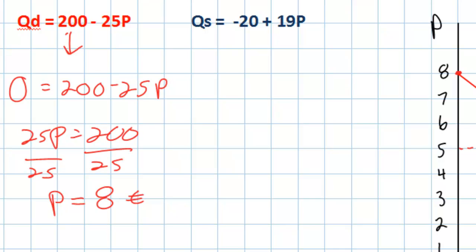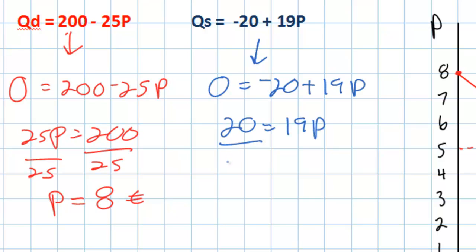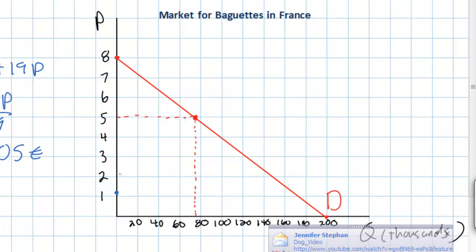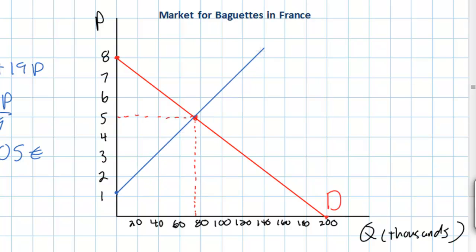Next let's derive our supply curve. We find the p-intercept by setting Qs equal to 0 and solving for p: dividing both sides by 19, the price at which the supply curve begins is approximately 1 euro and 5 cents. We put a point there and connect our supply curve so that it intersects the demand curve at the equilibrium price. We can now see the market for baguettes in equilibrium — an equilibrium price of 5 euros and a quantity of 75 baguettes.